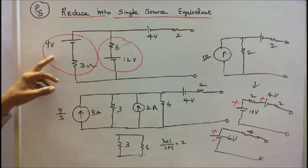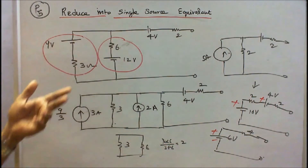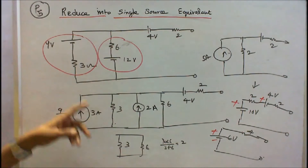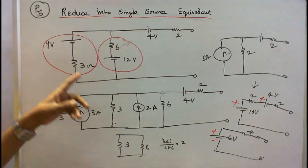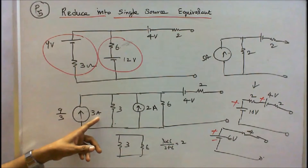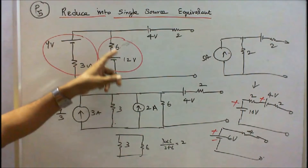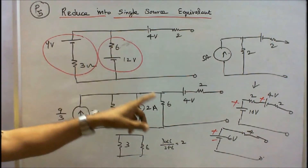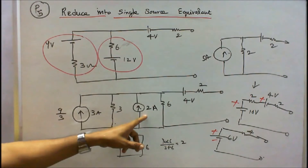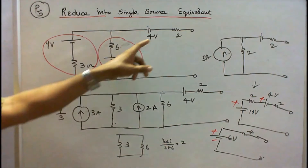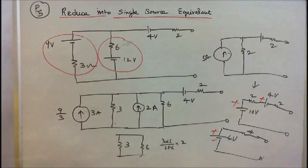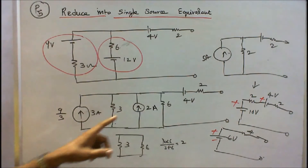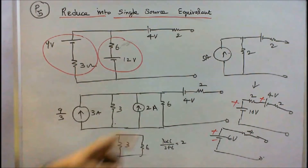Now I convert these 2 voltage sources into a current source. That is 9 by 3, equal to 3 amps, and the 3 ohm resistor is connected in parallel with the current source. Similarly, 12 by 6 is equal to 2 amps, and the 6 ohm resistor is connected in parallel with the 2 amp source. The current directions are the same, so 3 plus 2 is equal to 5 amps.